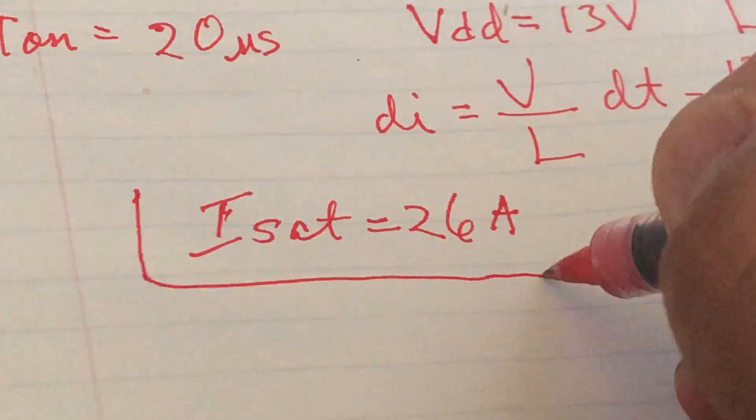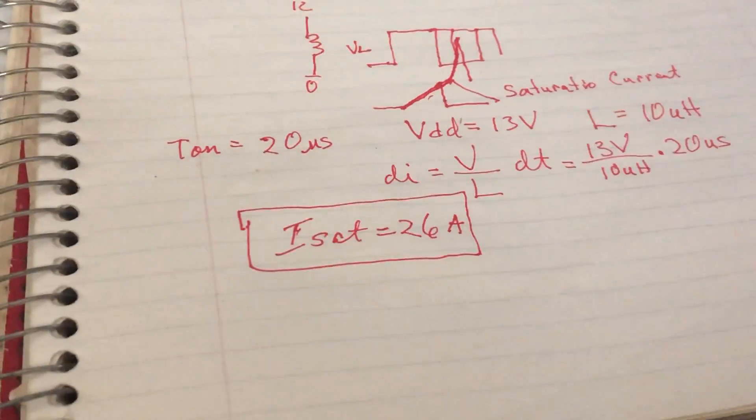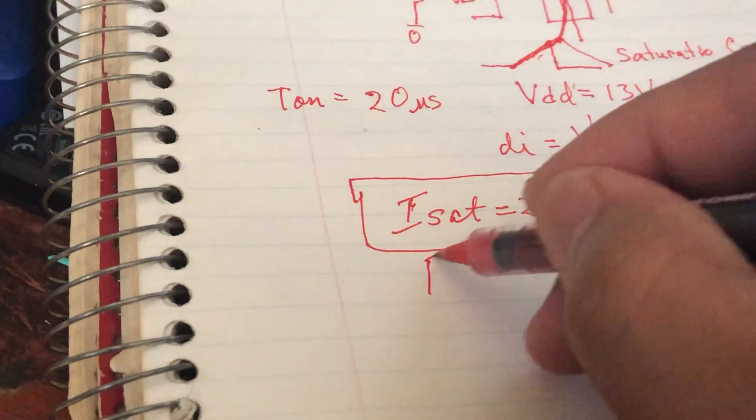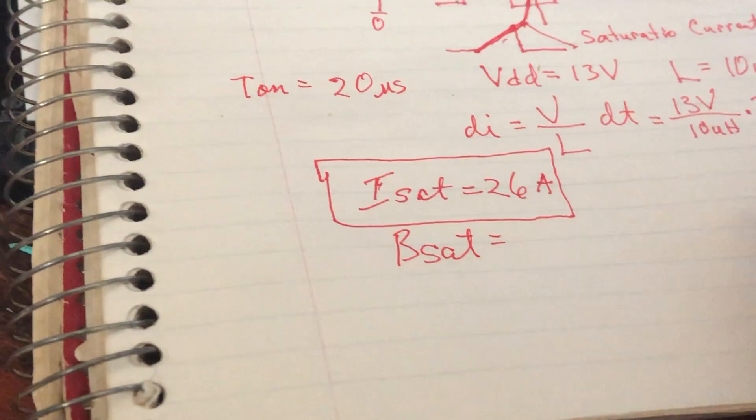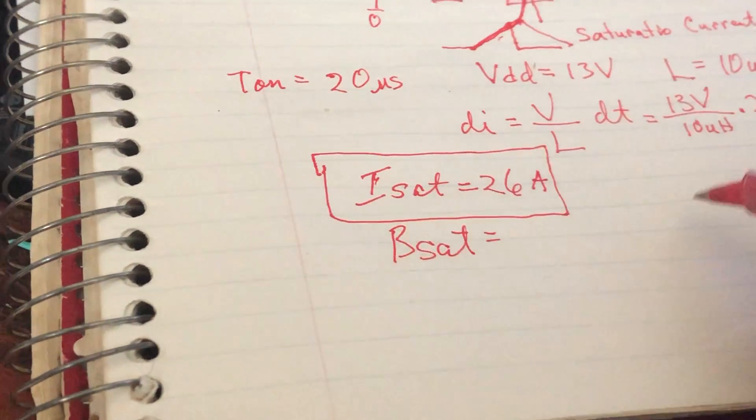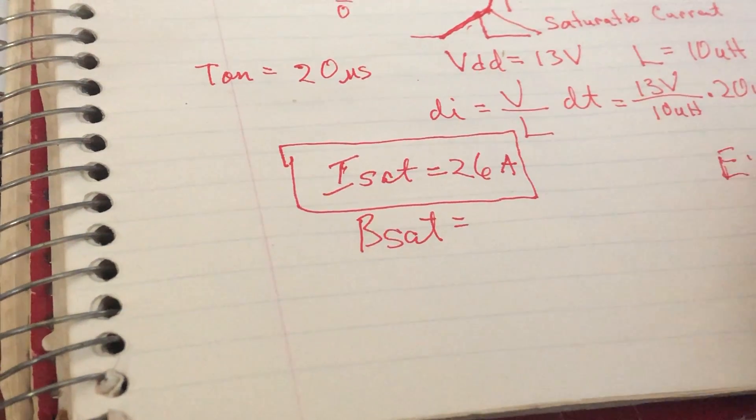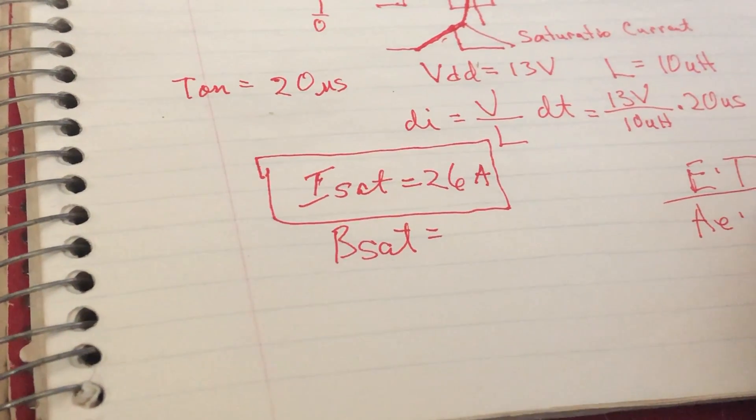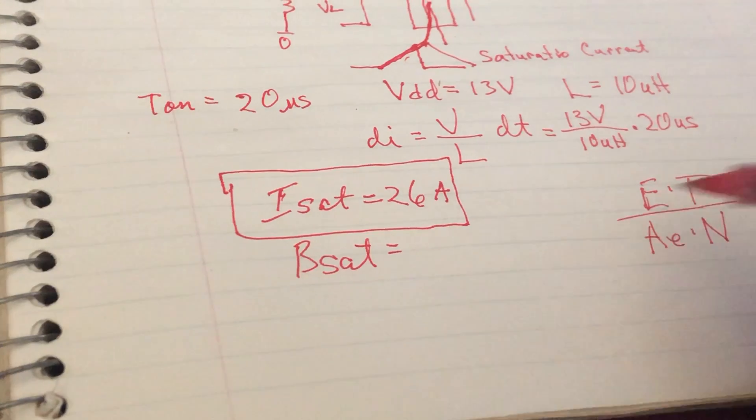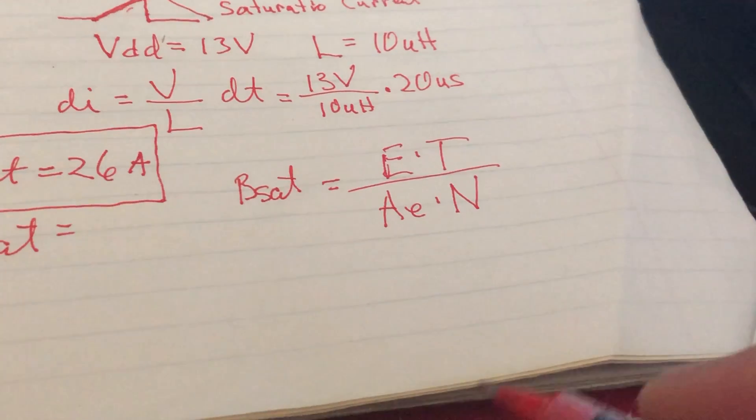Okay, so that's the point we're starting to saturate. Now, if you have this, then you should be able to backtrack and see what Bsat would be. To calculate Bsat knowing what your current is, I believe you can use the ET equation, and I believe it's Bsat equals ET over AE times N. You can use that equation.